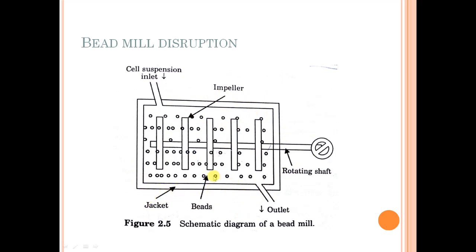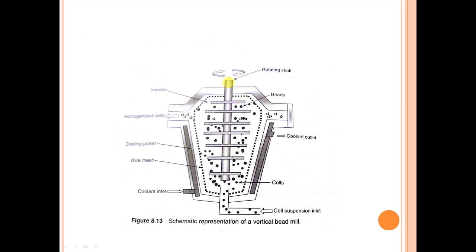The bead materials used inside are inert materials — made up of either alumina, titanium, or similar substances. These bead materials cause collision between the cells and the beads, and this collision leads to grinding between the bead and the cell, which leads to breaking up of the cell and releasing its contents. Finally, the cell suspension that is broken down — your product — comes out from the outlet.